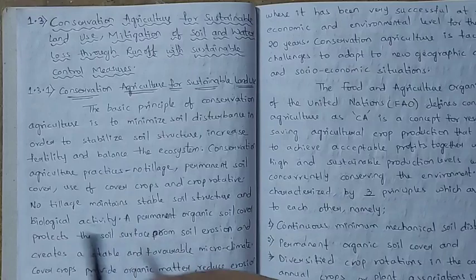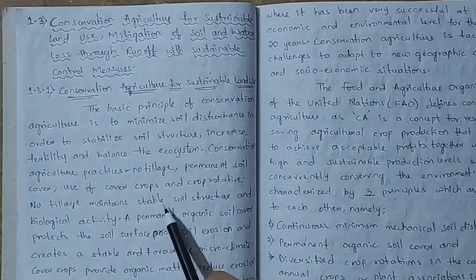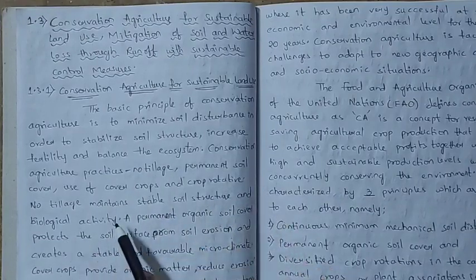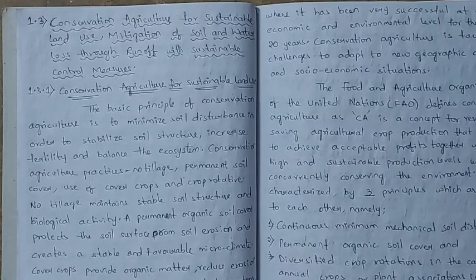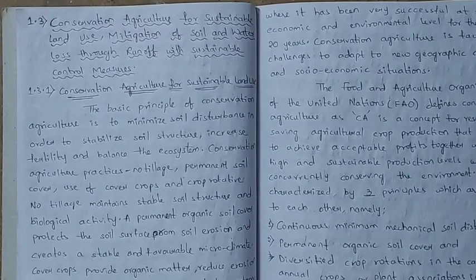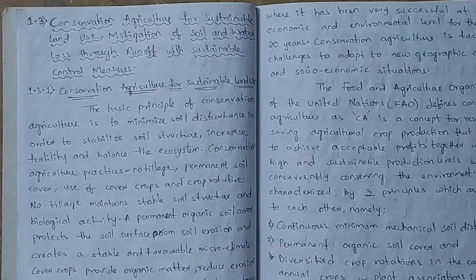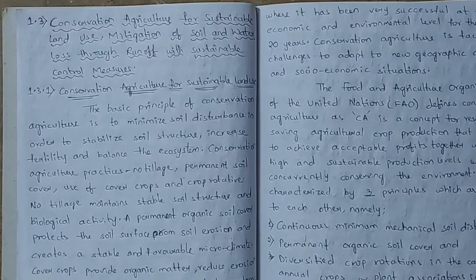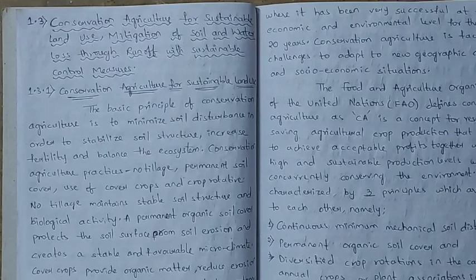No tillage maintains stable soil structure and biological activity. In farming, we normally use tractors, ploughing machines, and tilling equipment. But in no tillage, we grow crops without tilling the soil. This method means the soil structure and biological activity are not disrupted.